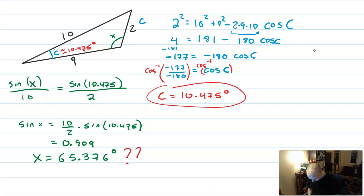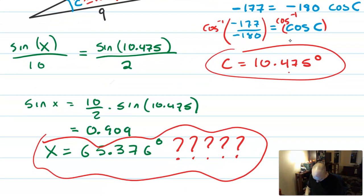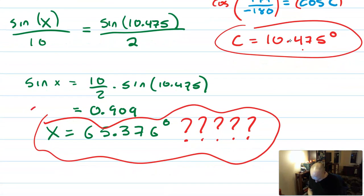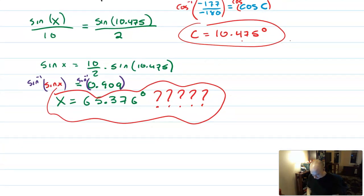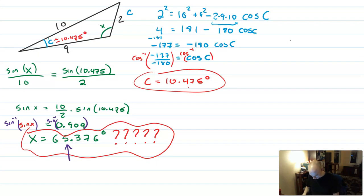And there's just no way that that can be right. Absolutely no way. And here's the problem. The problem was in that very last step when I used the function sine inverse. So I had sine of X equals 0.909, and I had to take the sine inverse of both sides.